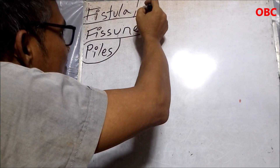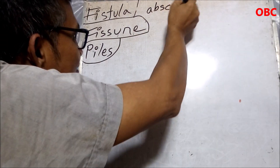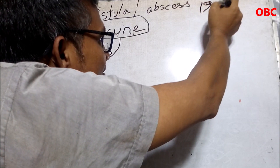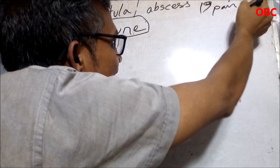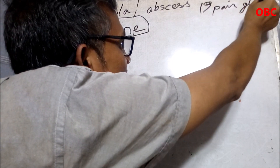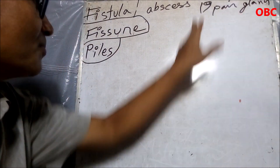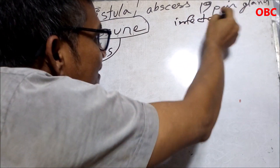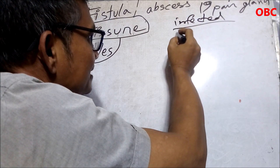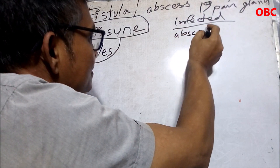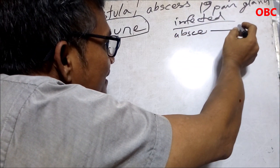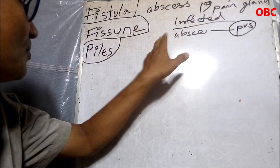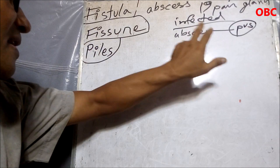Fistula is basically an abscess. You have 19 pairs of glands inside the anus. One of the glands may become infected. When it gets infected, it will develop an abscess, and when you have an abscess, you will have a lot of pus.